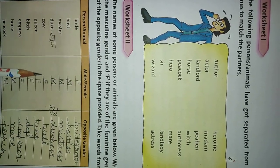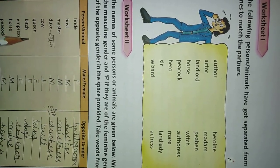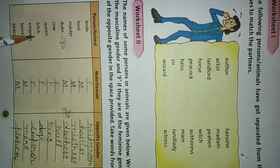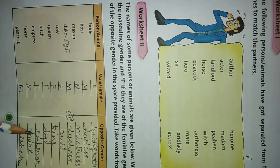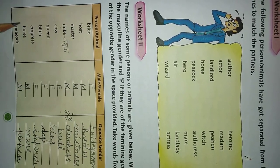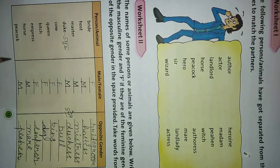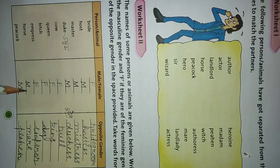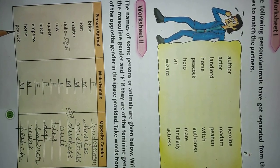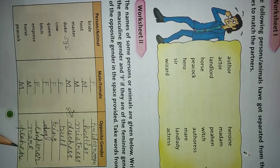Cow is female; opposite gender is Bull. Queen is female; opposite gender is King. Bitch is female; opposite gender — Empress is female, opposite gender is Emperor. Horse is male; opposite gender is Mare. Peacock is male; opposite gender is Peahen.